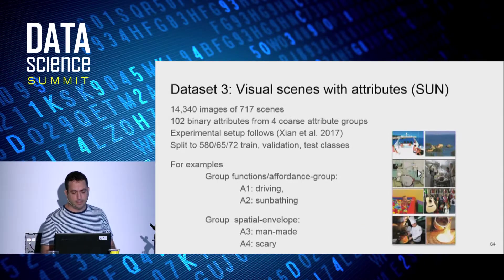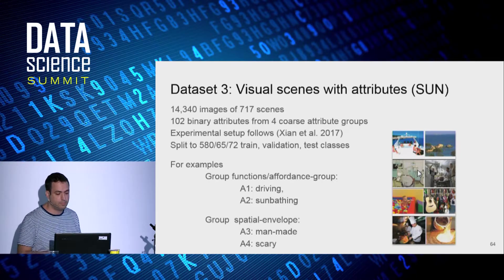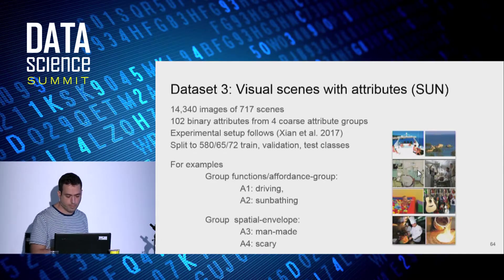The last dataset is SUN. It's a visual scene dataset. It has 700 scene types, 100 attributes, and 4 groups that are very coarse. And we will see that soon in the experiment.